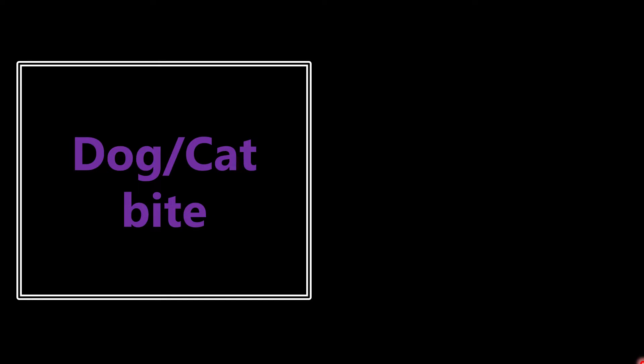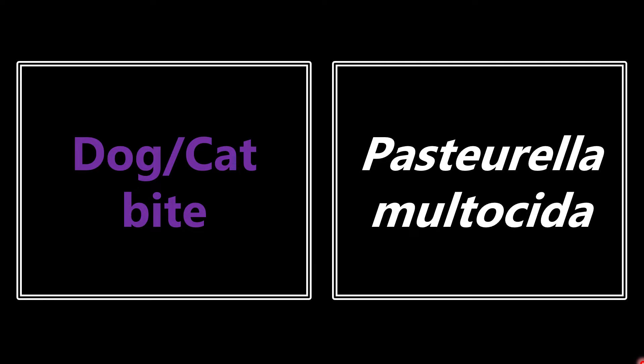The next one is a dog or cat bite. If you see this on the boards, one of the main things they're asking about is the microbe causing the infection, and that's going to be Pasteurella multocida. So if a kid comes in and got bit on the arm or face by a dog, the bug you need to be worried about and cover for is Pasteurella multocida.